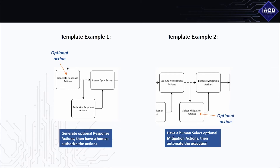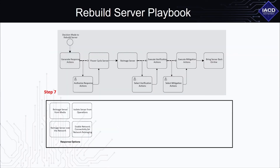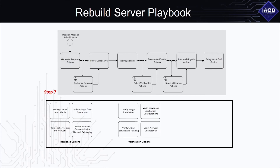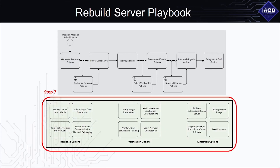Step 7: Insert the grouped optional actions from Step 5 into the action options box below the process steps. These are the optional best practices and local policies to choose from.